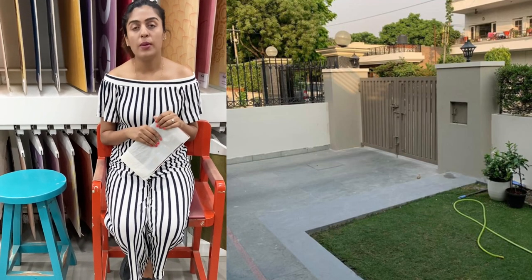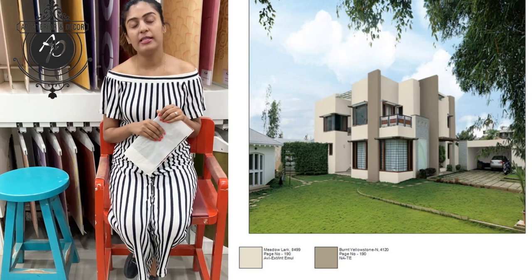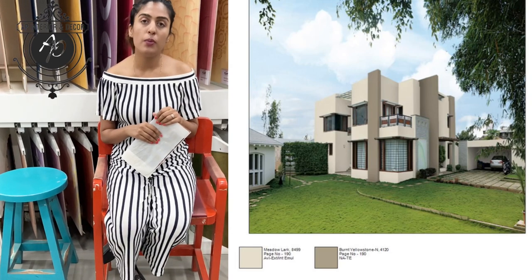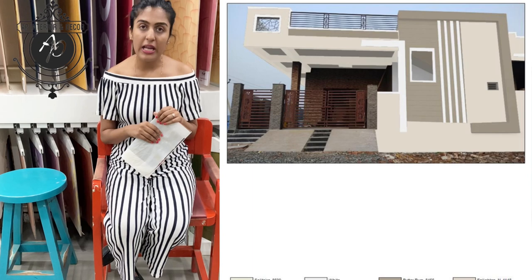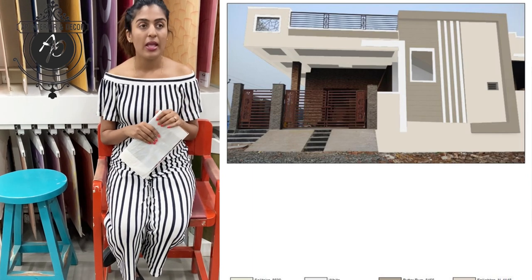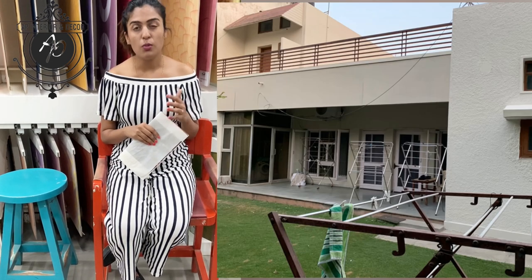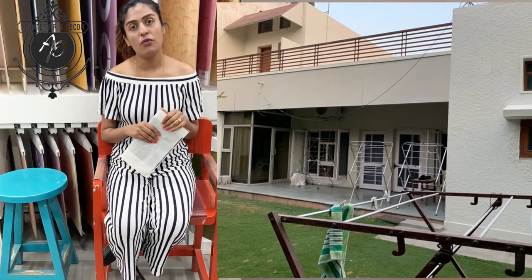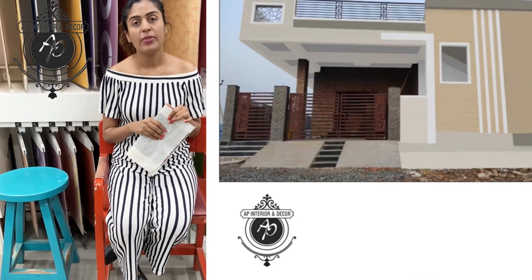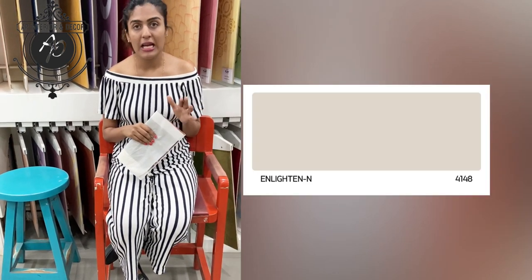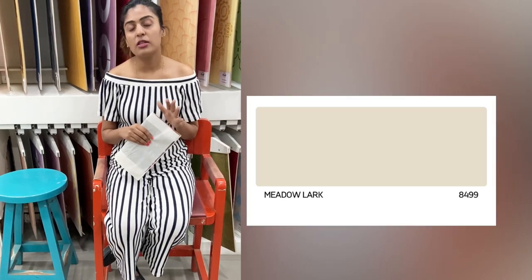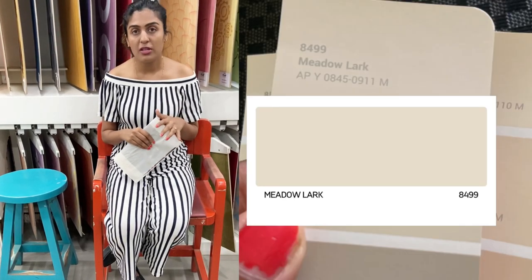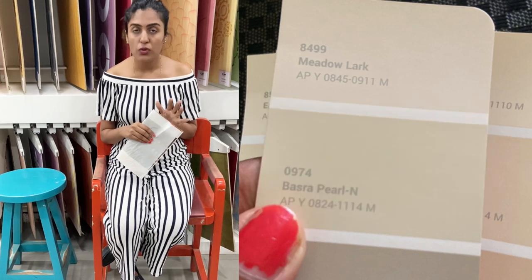The two popular exterior shades which I often recommend are: a light cream base shade called Enlightened, and the other one is Midnight Black. These are the two popular shades which I like to use as a base color for the exterior.